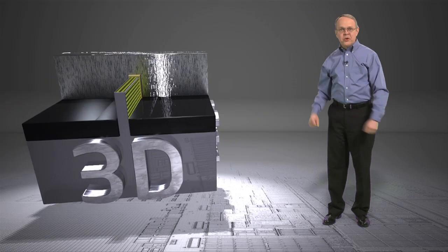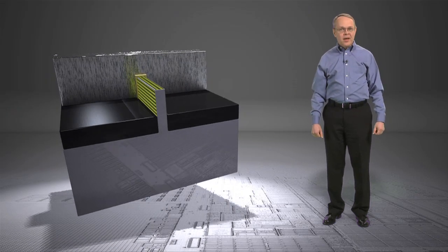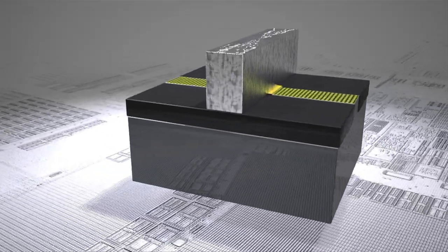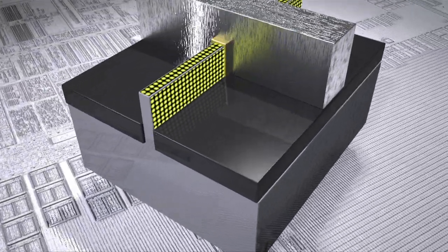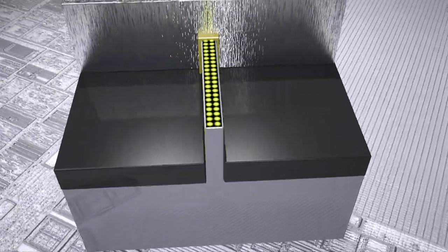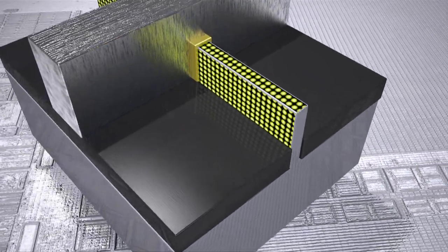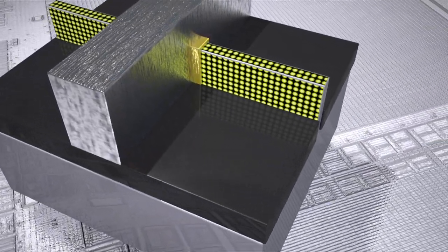As transistors get ever smaller, one way to achieve this is to get tighter control by having the gate wrap around the channel as much as possible. This is Intel's new 3D transistor. With the 3D transistor's architecture, we replace the flat two-dimensional stream with one or more three-dimensional fins. The control is on all three sides of each fin, rather than just one, as in the planar transistor.